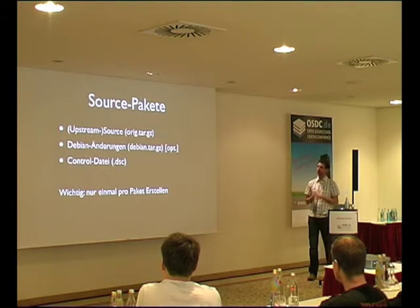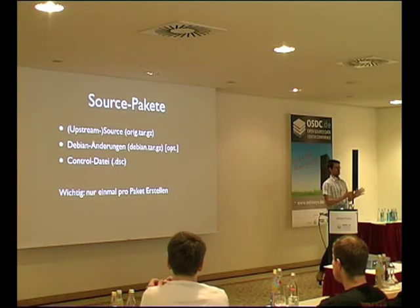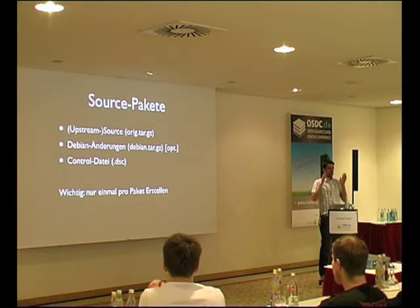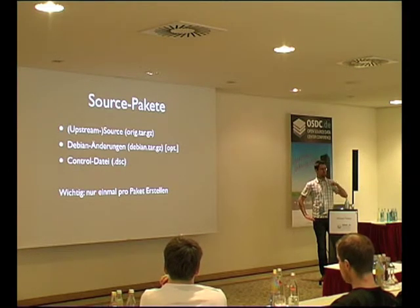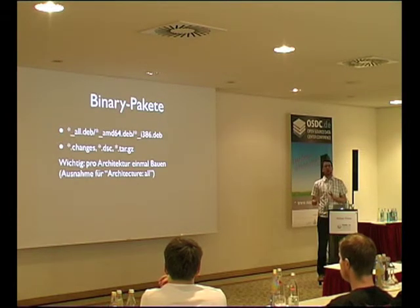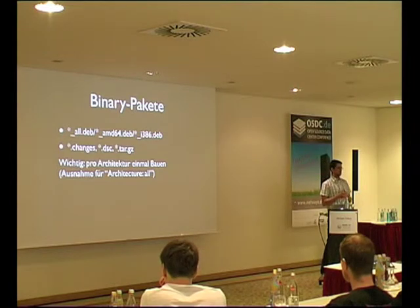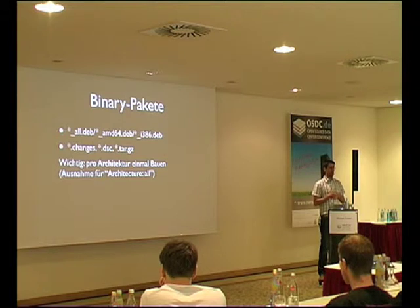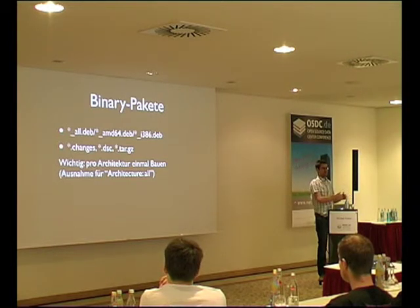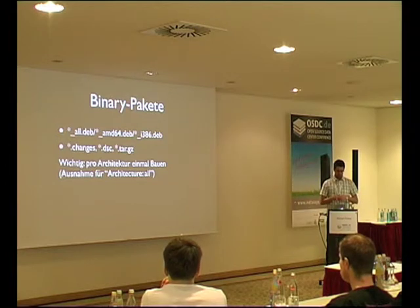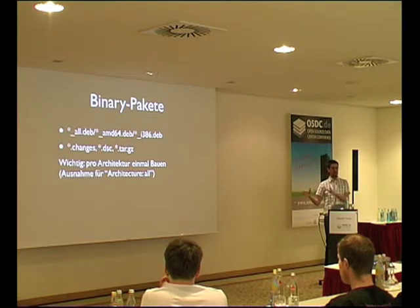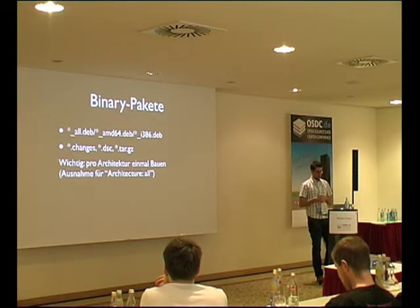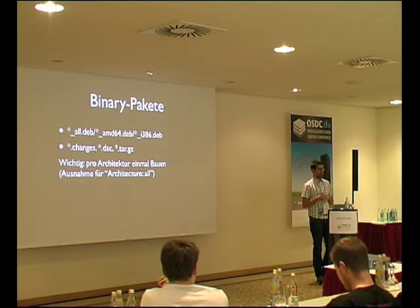Wie funktioniert Jenkins Debian Glue? Bei Debian gibt es Source-Pakete – die baut man genau einmal. Man möchte genau eine Version einmal vorliegen haben. Wenn man das in Git hat, baut man das ein einziges Mal heraus und behandelt das weiter in den Binär-Paketen. Die baut man dann pro Architektur. Wenn man mehrere Architekturen unterstützen möchte und etwas Architekturspezifisches im Code hat, muss man das aus einem Source-Tree mehrmals für die Architekturen rausbauen. Jenkins Debian Glue unterscheidet zwischen Source-Paketen und Binary-Paketen und weiß auch: wenn es ein Architecture-All-Paket ist, baut es das nur einmal.